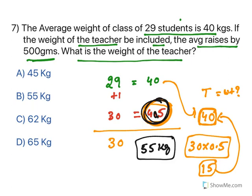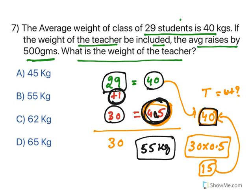So if the teacher weighs 55 kg, they will increase the average to 40.5 kg. Understand the question: 29 students, average weight 40; include the teacher, total becomes 30 and average increases by 0.5 kg. The increase of 0.5 kg across 30 people gives 15 kg extra above the base of 40, so 40 + 15 = 55 kg. The answer is 55 kg.